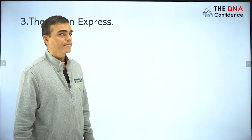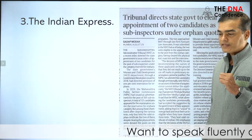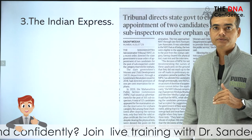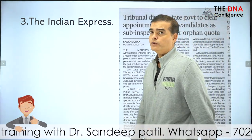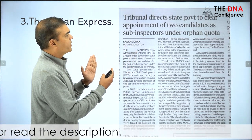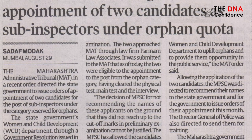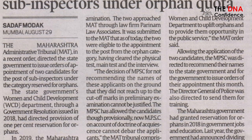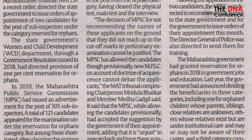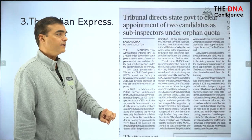Next is the Indian Express, a very nice newspaper for average readers who have good vocabulary and good reading habits. The sample news I've selected is about a tribunal directing the state government to clear the appointment of two candidates as sub-inspectors for the orphan quota. While reading, if you come across new words — like 'orphan' — jot them down, understand the meaning, write the pronunciation, and finish the news.